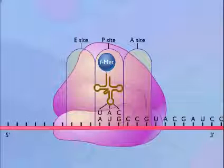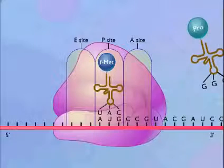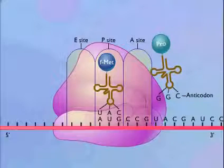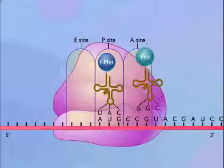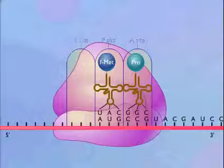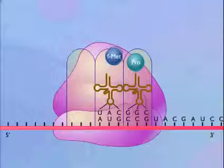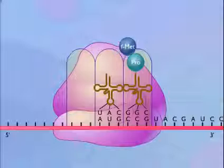The initiating transfer RNA carrying formyl-methionine binds to the P-site. A transfer RNA that recognizes the next codon and carries the second amino acid then moves into the A-site. The formyl-methionine carried by the transfer RNA in the P-site is then joined to the amino acid carried by the transfer RNA that just entered the A-site by a peptide bond.